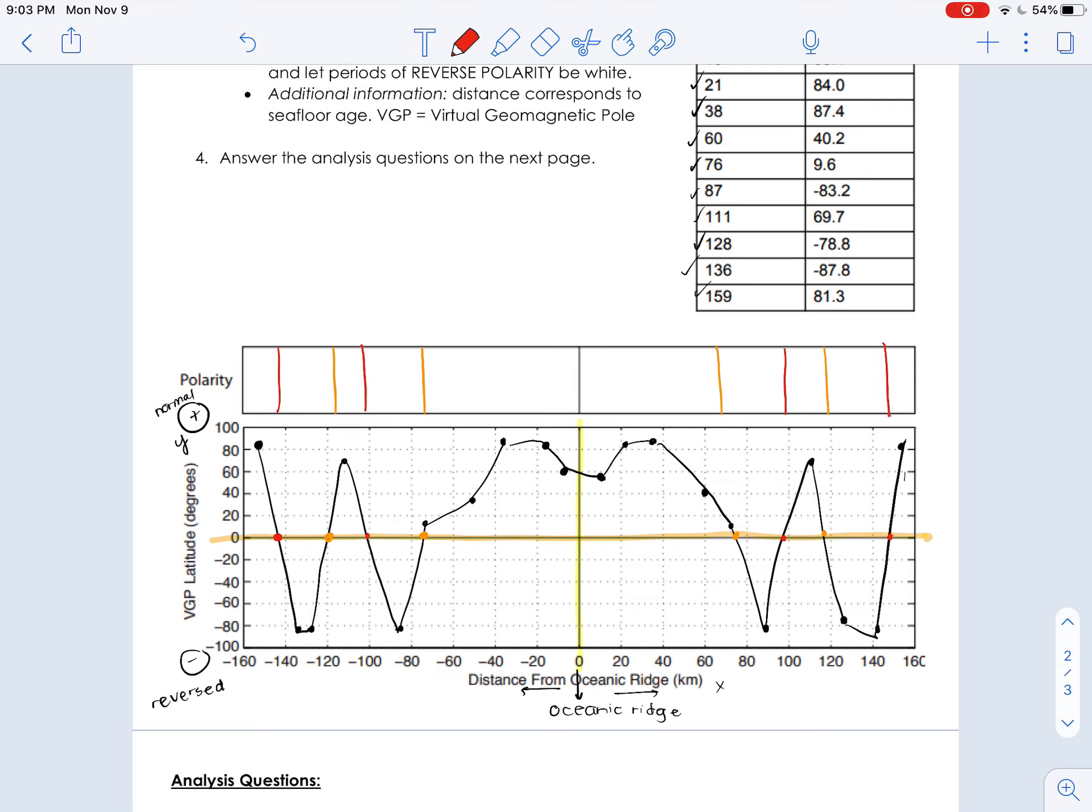Okay, so I think that does it. And what you should notice right away is that, again, we have something that's almost identical on both sides of the zero line or on both sides of the oceanic ridge.